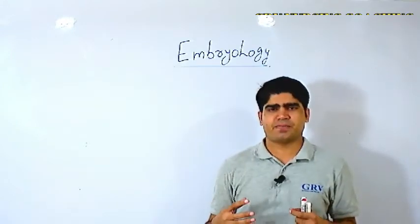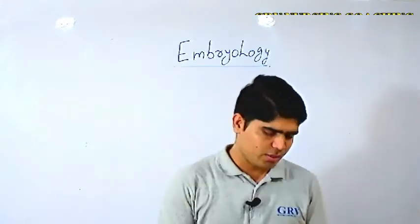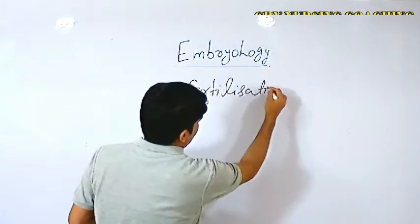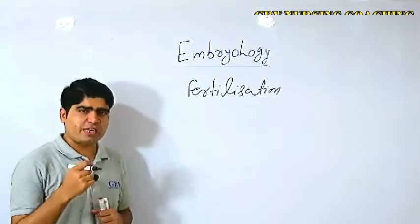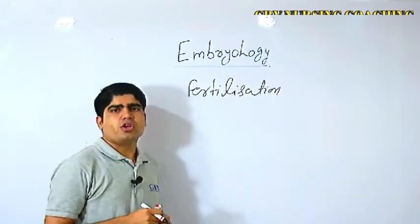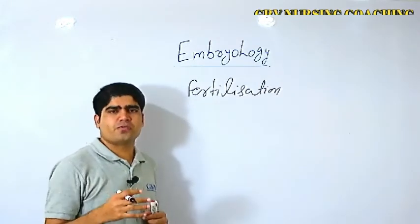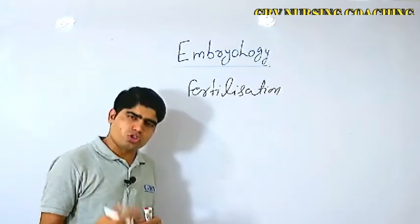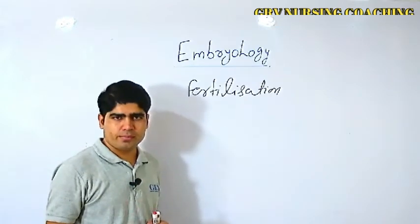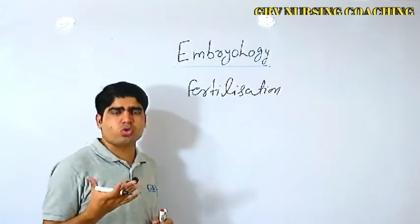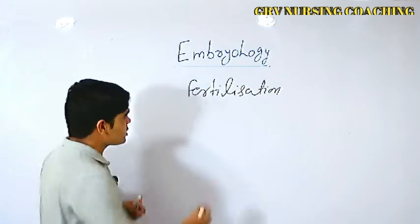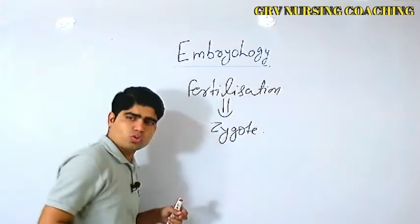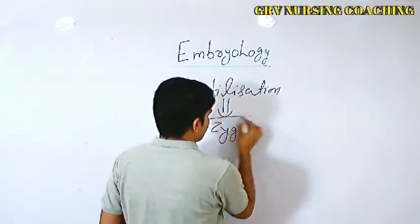When fertilization occurs, a new structure is formed. Fertilization means the fusion of male gamete and female gamete — that is the simple meaning. Another way to say it: it is the fusion of sperm and ovum. After this fusion, a new single-cell structure is formed, called the zygote.